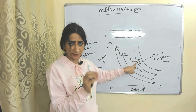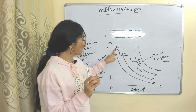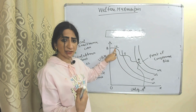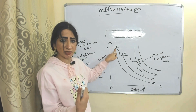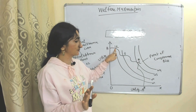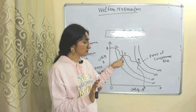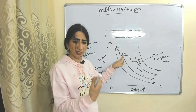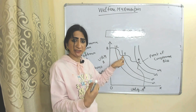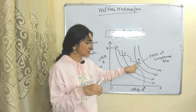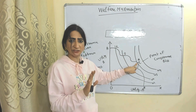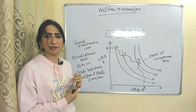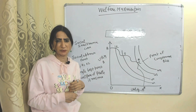This point not only satisfies Pareto optimality but also helps achieve maximum welfare of society — it is our single best point. Society will not prefer R over E* because R lies on a lower social indifference curve, meaning less welfare. Similarly, society will not prefer S over E* because S also lies on a lower social indifference curve. E* is the single best point where welfare of society is maximum. Thank you so much for watching, bye, take care.